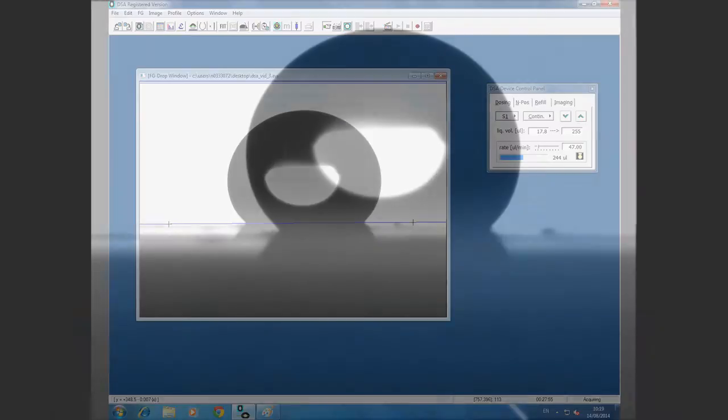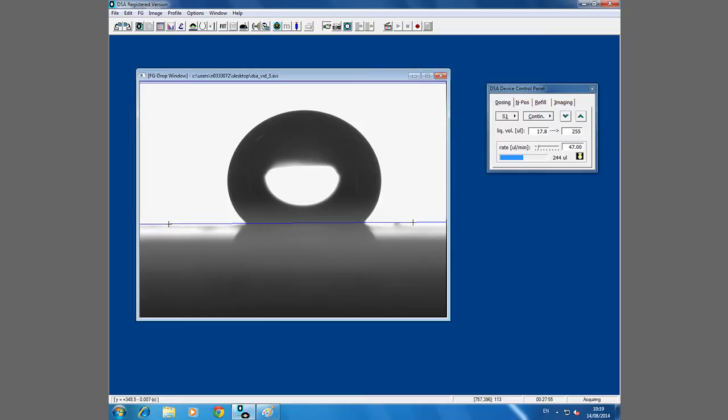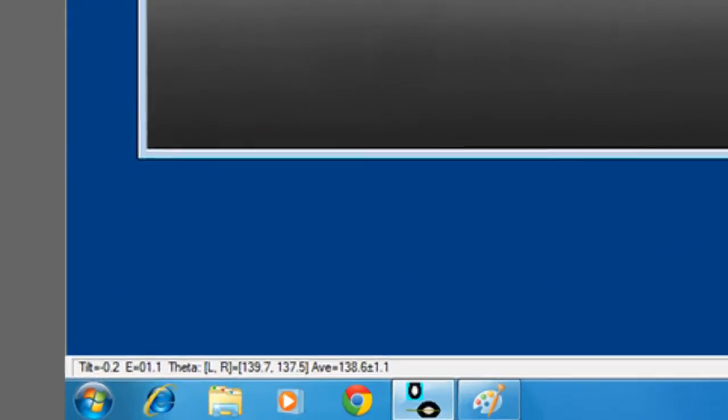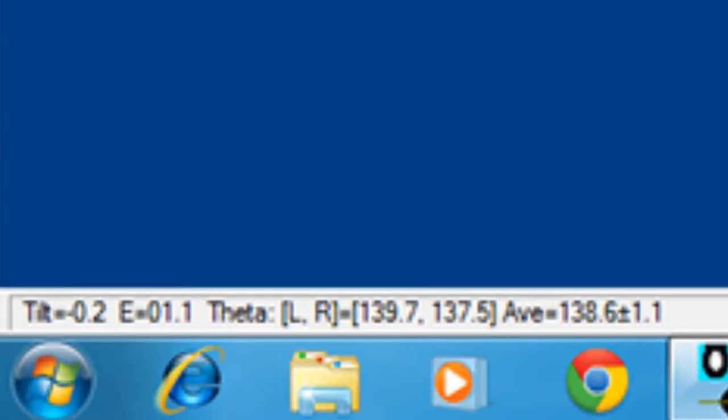When the image is properly adjusted, we can take a snapshot using the software. This can then automatically determine the contact angle and displays the left, right, and average angles.